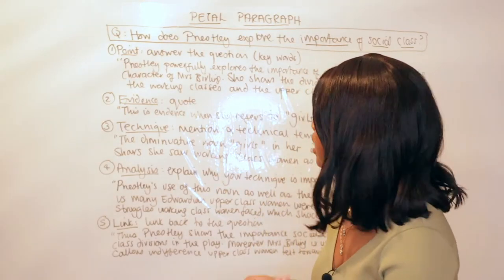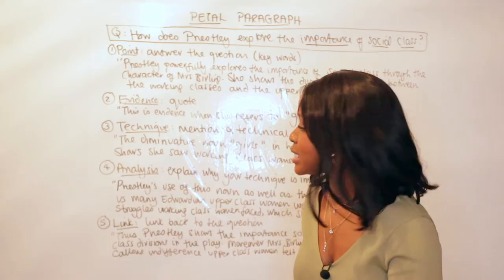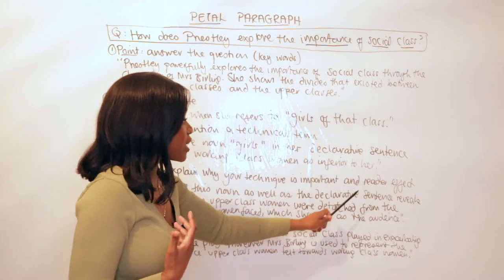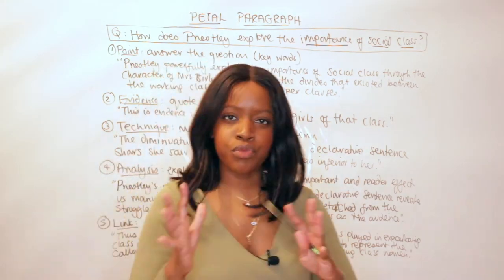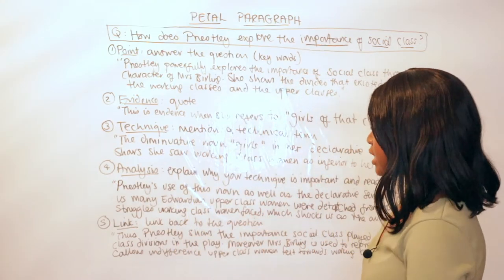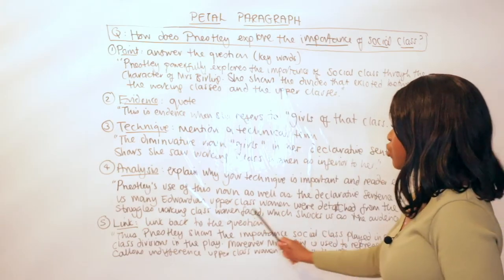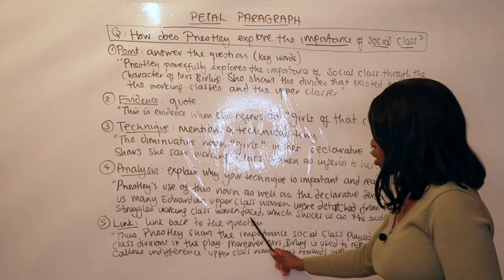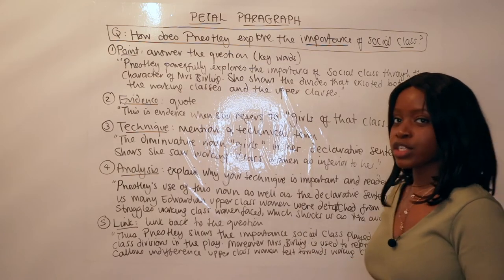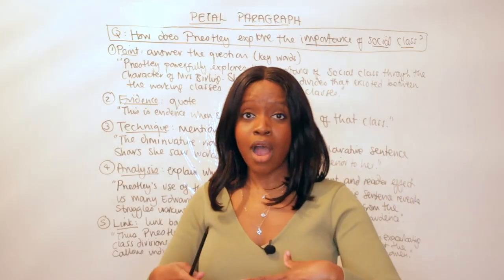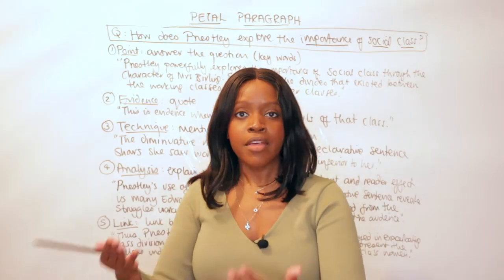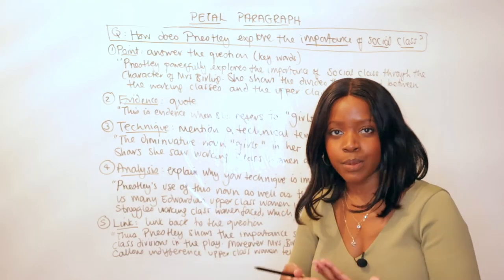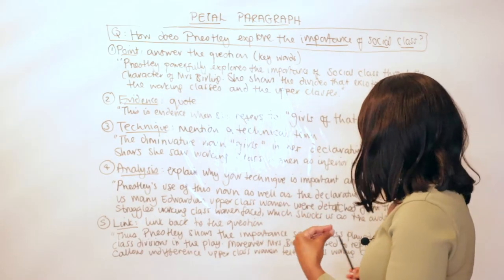The A stands for Analysis — explain why your technique is important and describe the reader or audience effect. My analysis is: 'Priestley's use of this noun, as well as the declarative sentence, reveals how many Edwardian upper-class women were detached from the struggles working-class women faced, which shocks us as the audience.' I'm explaining why the technique matters and noting that we as the audience are shocked by Mrs. Birling's attitude.